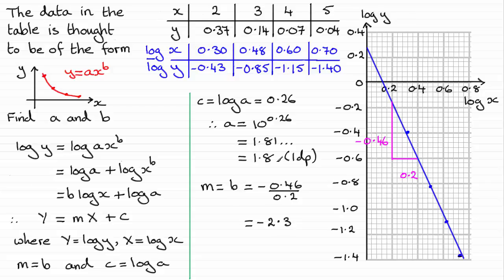So our a value is 1.8 to one decimal place, and b is minus 2.3. So we can put that together, and we can say that the equation of this curve is going to be y equals 1.8x to the power minus 2.3.